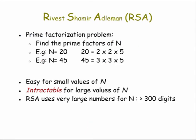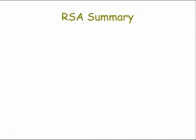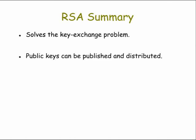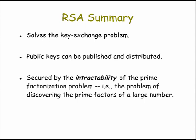That's a high-level summary of the RSA algorithm. Let's summarize its key features. First, like Diffie-Hellman, the RSA algorithm solves the key exchange problem. Unlike Diffie-Hellman, however, the RSA public keys can be widely published and distributed rather than needing to be shared among parties in an encryption transaction, making it especially well-suited for Internet encryption. Finally, RSA is secured by the intractability of the prime factorization problem — the problem of trying to discover the prime factors of a very large number. Here again, we see intractability being used to protect information, just as we did when we used it to help protect passwords from brute force attacks.